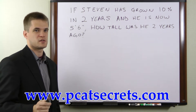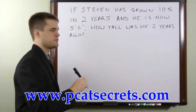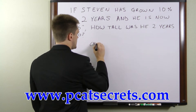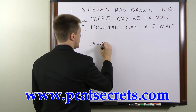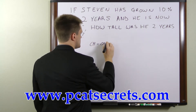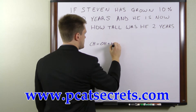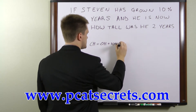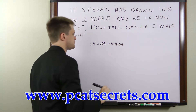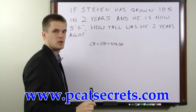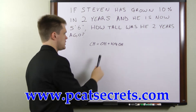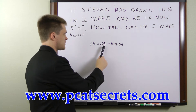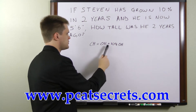That means our equation has to look like this. The current height is equal to the original height plus 10% times the original height. And we're looking for the original height, so to solve for the original height we have to combine these two terms.